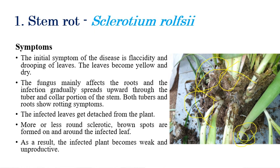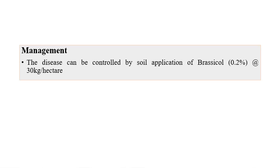The infected leaves get detached from the plant. If we look clearly, we can see mustard-shaped sclerotia — black to brown colored — clearly visible on the root region. The most characteristic feature of stem rot is these brown to black colored sclerotia clearly seen in the soil region. Later stages, the plant slowly weakens and becomes unproductive.